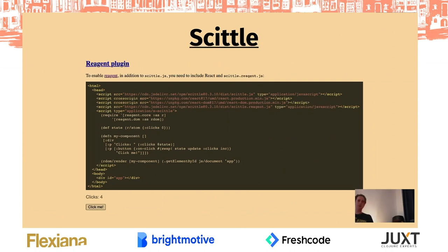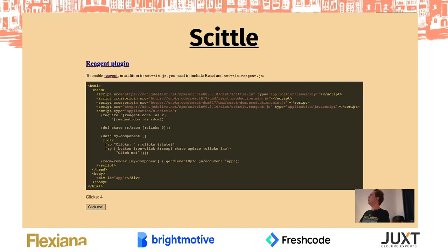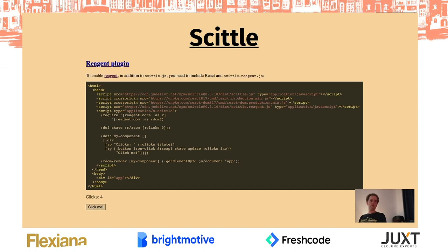There is a Reagent plugin for Skittle. You include another script tag for `skittle.reagent`, provide your own version of React — since it's all optional and modular — and then you can include a Reagent snippet in your script tag and have a working Reagent component. This is all the setup you have to do — no project or anything, just an HTML file. ClojureScript is now running on CodePen without any compilation — you can try things out. It's nice for getting started on smaller projects where you're not sure if it's worth setting up a project skeleton.